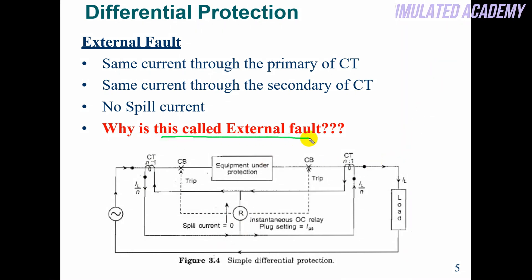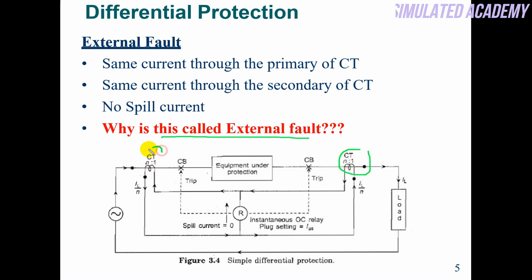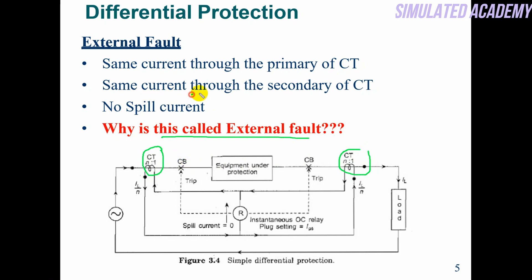The fault which occurs outside the CTs and PTs — beyond the zone — is called an external fault, also called a through fault. For example, if an external fault occurs, the fault current will pass through this CT and also through this CT. This means the spill current here will be zero. So for an external fault, this relay will not operate — same current through the primary of CT, same current through the secondary of CT, no spill current.